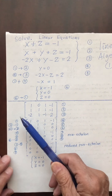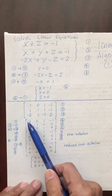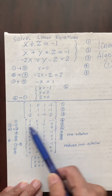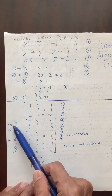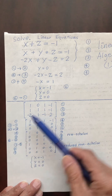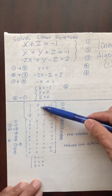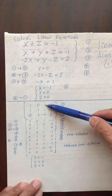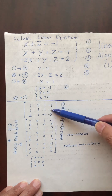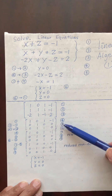Now I copy row 1: 1, 0, 1, negative 1. For the next line I use row 2 subtract row 1. So 1 minus 1 is 0; 1 minus 0 is 1; 1 minus 1 is 0; negative 1 minus negative 1 is 0. I label this as line 5.